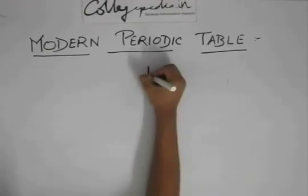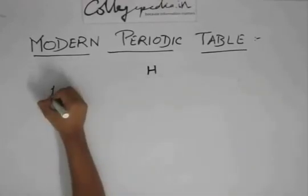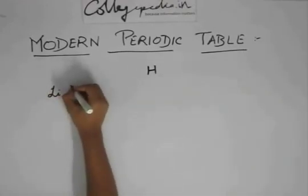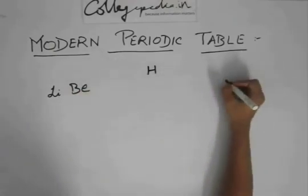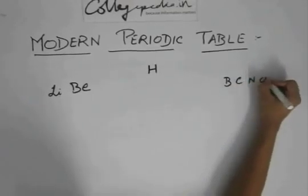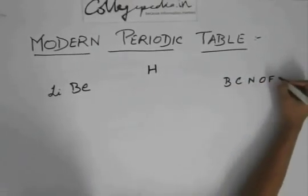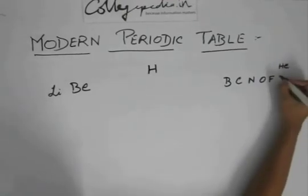We have talked about the periodic table in which hydrogen was hanging in mid-air. And then there was lithium, beryllium, and then there was a long gap. Then there was boron, carbon, nitrogen, oxygen, fluorine, and then there was helium over here, of course. And then there was neon.